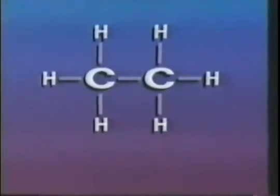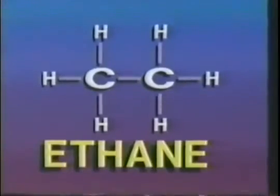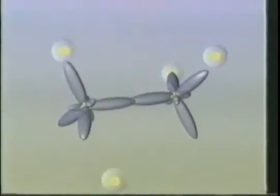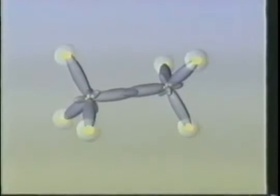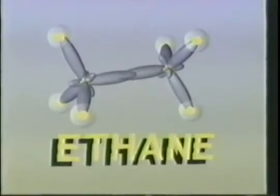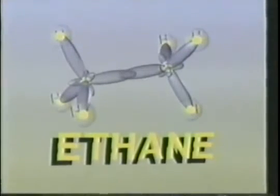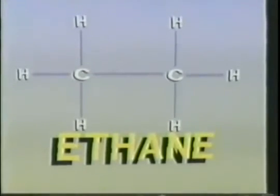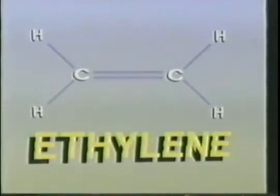Carbon bonds to a variety of atoms, including other carbon atoms. This is the structural formula for ethane. The carbon-carbon sigma bonds can be visualized taking place in this manner. Two carbon SP3 orbitals overlap, while the remaining SP3 orbitals overlap with hydrogen to take on this configuration in ethane. So far, we have examined only single sigma bonds.